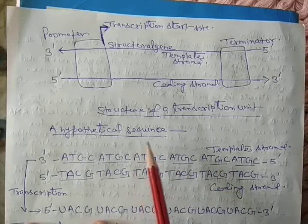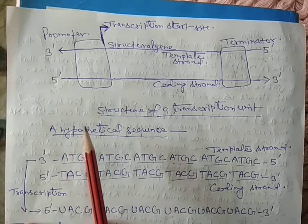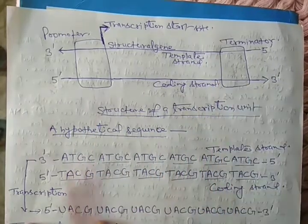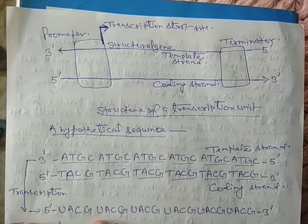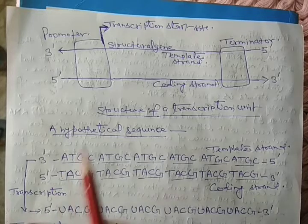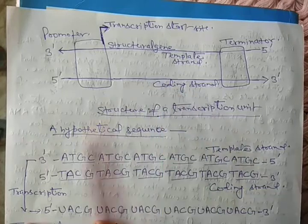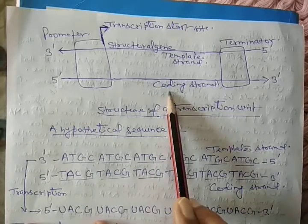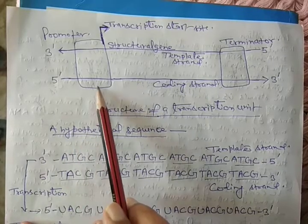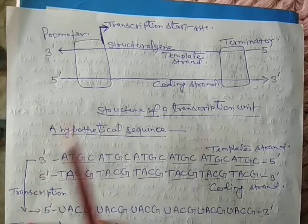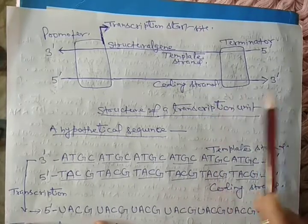Conventionally, the promoter is said to be located at the 5' end. To define a transcription unit, we use the reference from the coding strand. So when we say the promoter is at the 5' end, we mean the 5' end of the coding strand — even though the coding strand does not take part in transcription. Likewise, the terminator is located at the 3' end of the coding strand.